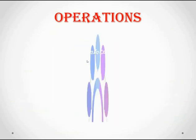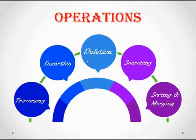Now we move to the second topic: operations of data structures. There are six basic operations. The first is traversing, which visits each and every element in the data structure and helps perform operations like searching and sorting. The second is insertion, which means adding an element to the data structure — whether it's an array, linked list, or graph.